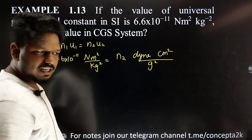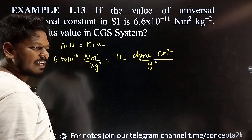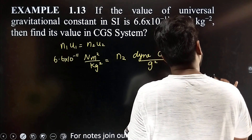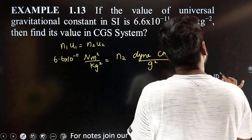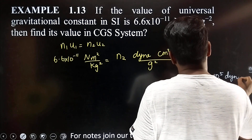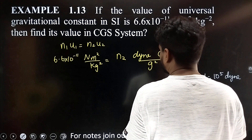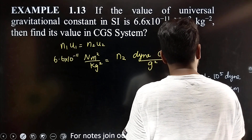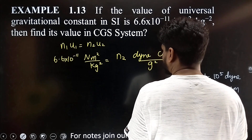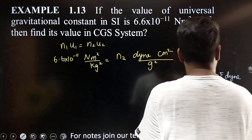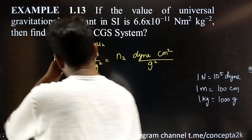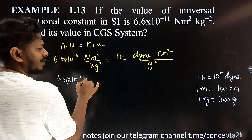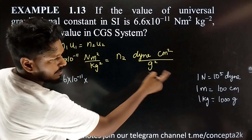The relationship between Newton and dyne: 1 Newton equals 10 power 5 dyne. 1 meter equals 100 centimeters. 1 kilogram equals 1000 grams. So, 6.6 into 10 power minus 11 Newton will be converted using these relationships.